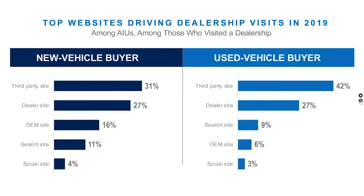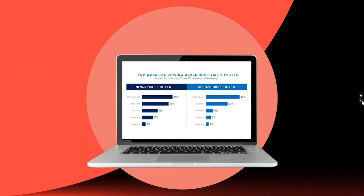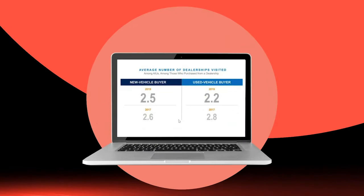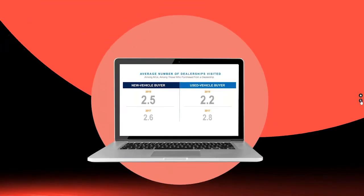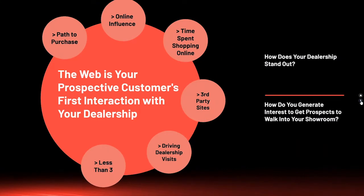Thirty-one percent of people spend their time on third-party sites and 27% go to our site. We have to drive customers from that third-party site to our website — and the answer can't only be price. When I started, customers made 4.5 dealership visits to buy a car. By 2017 it was 2.6, and now it's down to 2.5 on new cars and 2.2 on used. When a customer shows up they're ready to buy, so we've got to build a message before they arrive.